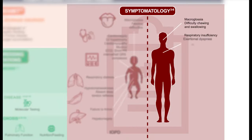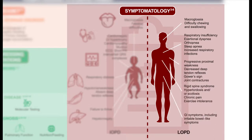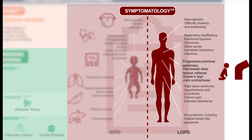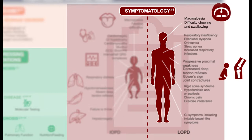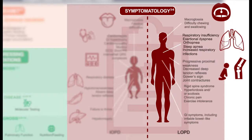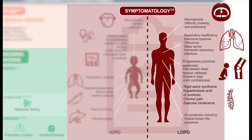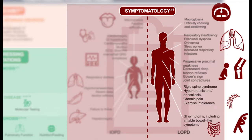The symptoms in late-onset Pompe disease include proximal weakness, decreased deep tendon reflexes, a Gower sign, and joint contractures. Patients can have difficulty chewing and swallowing, respiratory insufficiency, exertional dyspnea, orthopnea, and sleep apnea. They can also have hyperlordosis and scoliosis, chronic pain, exercise intolerance, and some GI symptoms.